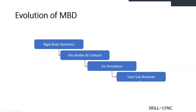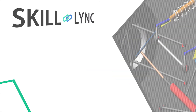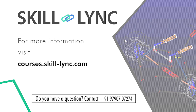Lastly, user subroutines — mostly used by advanced users — are essentially custom functions that help automate processes. They are increasing in number these days as people move towards automation. This is how MBD has evolved over the years, from rigid body dynamics all the way to user subroutines.